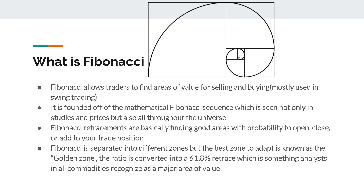To get started, what is Fibonacci? Fibonacci is basically percentage retraces that allow you to find areas of value for both selling and buying. It can be used in day trading and long-term investing, but mainly it's going to be used in swing trading, which is the focus of this course. It is founded off of the mathematical Fibonacci sequence, which is seen not only in studies and prices, but also all throughout the universe. Fibonacci retracements are basically finding good areas with high probability to make some sort of trade off of, whether that be buying or selling.